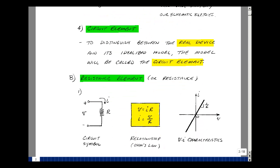Our next definition is called circuit element. To distinguish between a real device and its idealized model, the model will be called a circuit element.